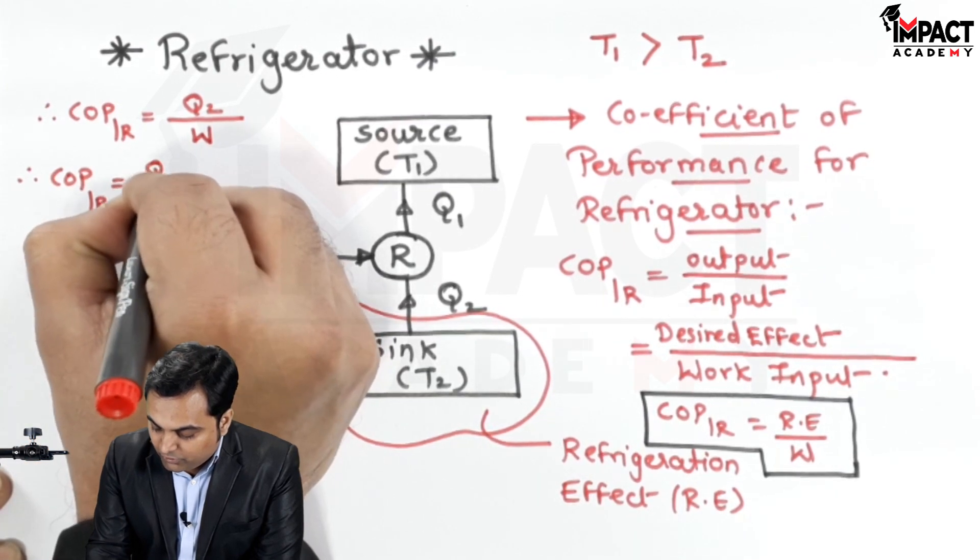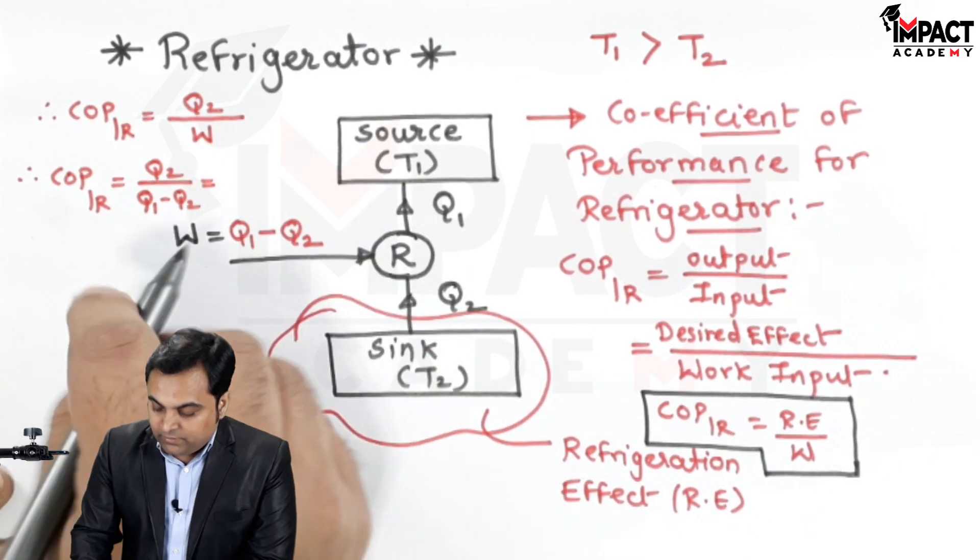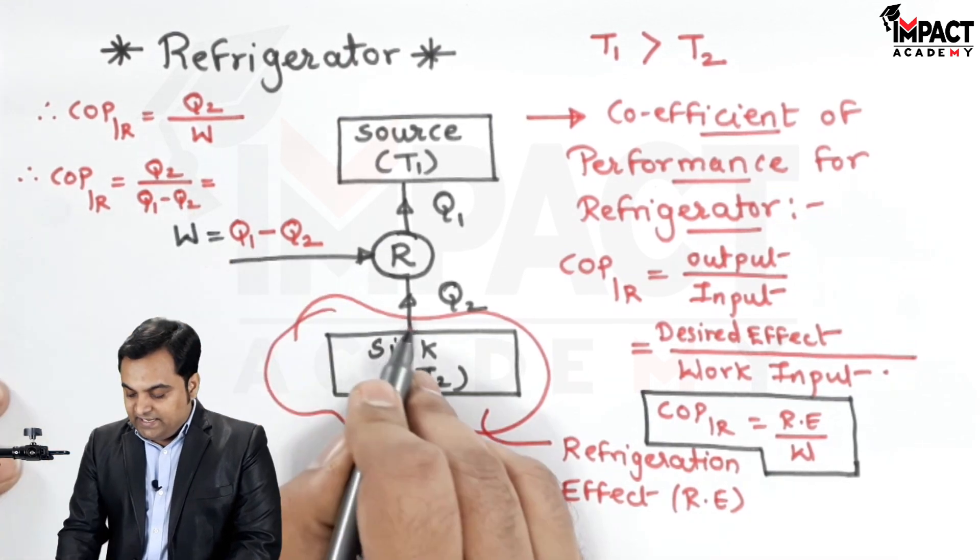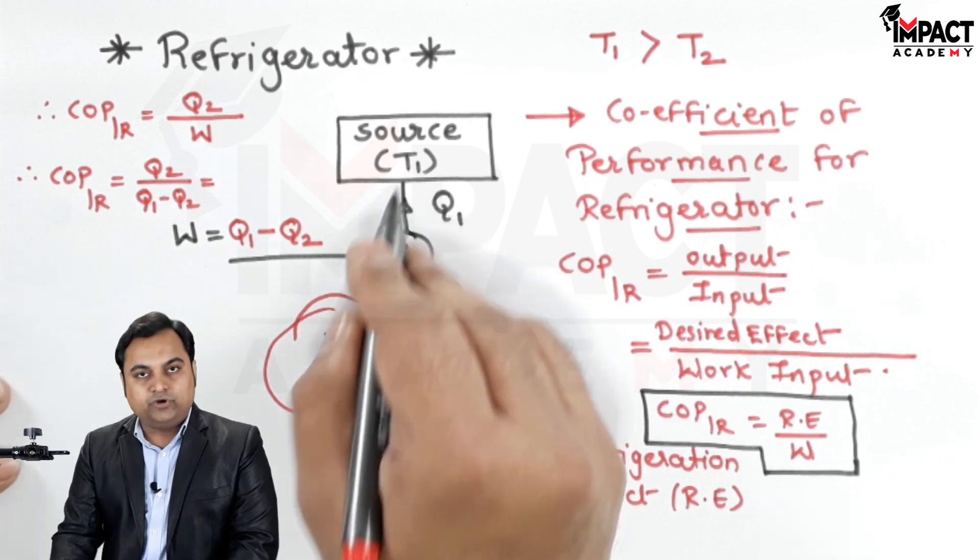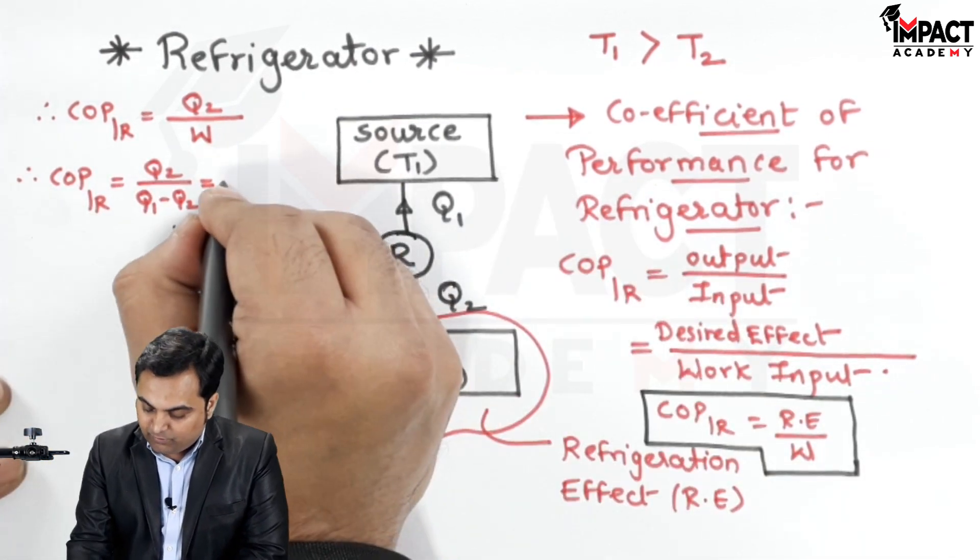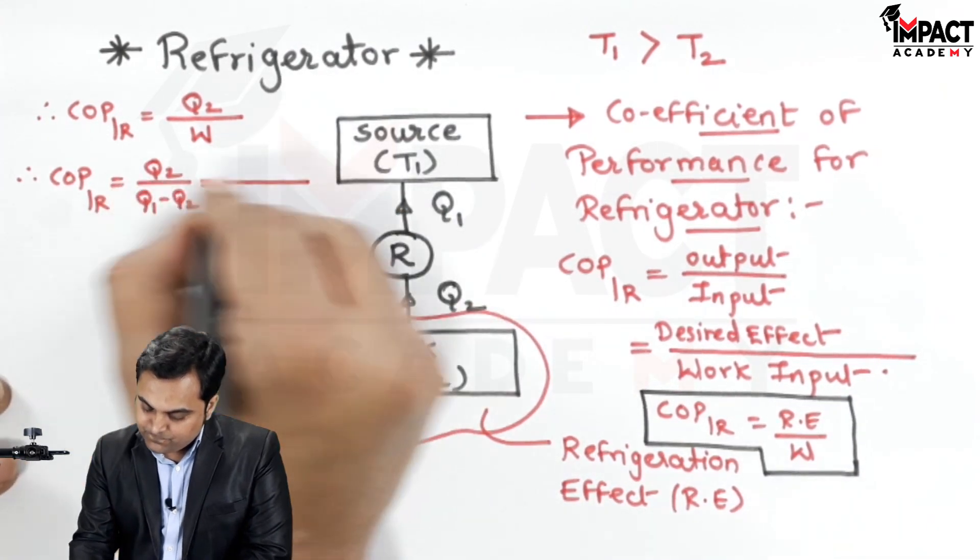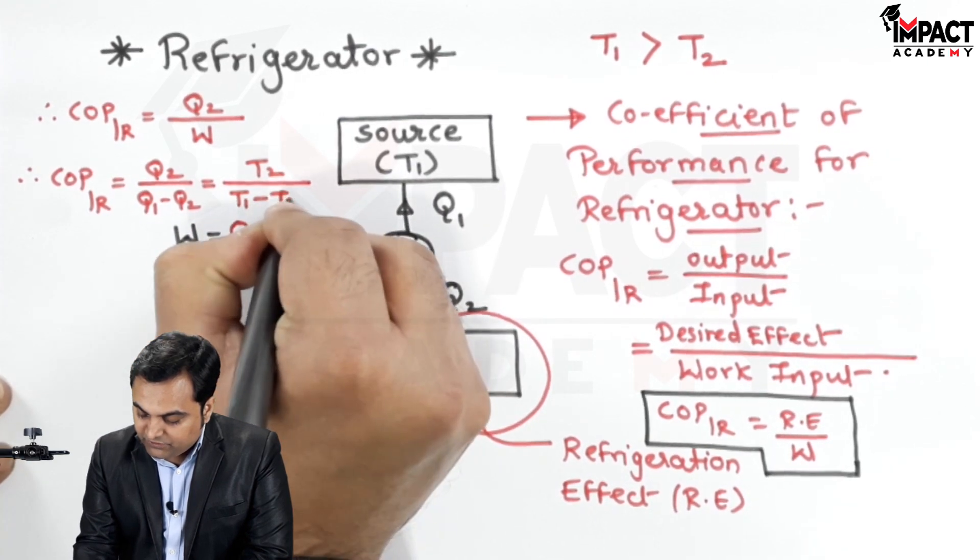Now this formula of COP is in the form of the heat extracted from the sink and heat rejected to the source. Same formula can be written in the form of temperatures. That is T2 upon T1 minus T2.